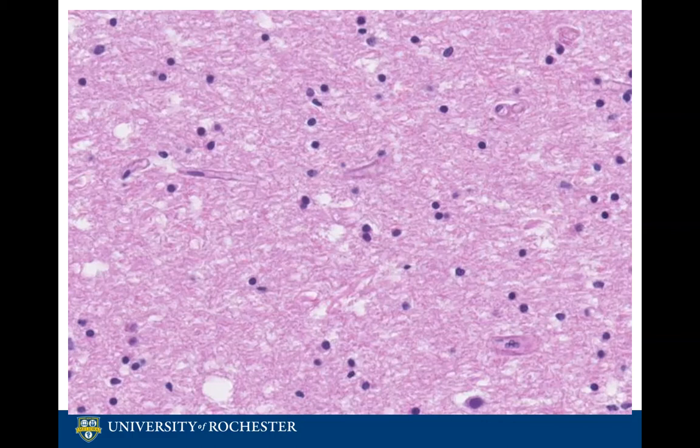The perikaryon contains the nucleus as well as most organelles responsible for the functional activities of the neuron. On the virtual slide, we can see the nucleus relatively well, as well as surrounding cytoplasm. The cytoplasm has a pink to purple appearance, and you may be able to appreciate the dendritic processes in some of the cells.